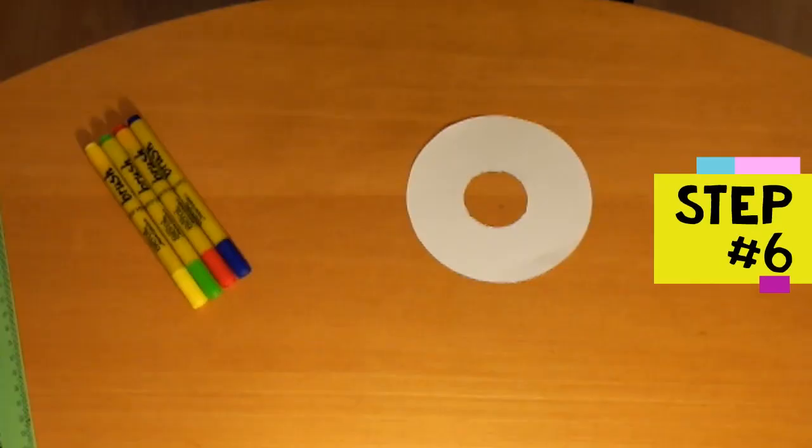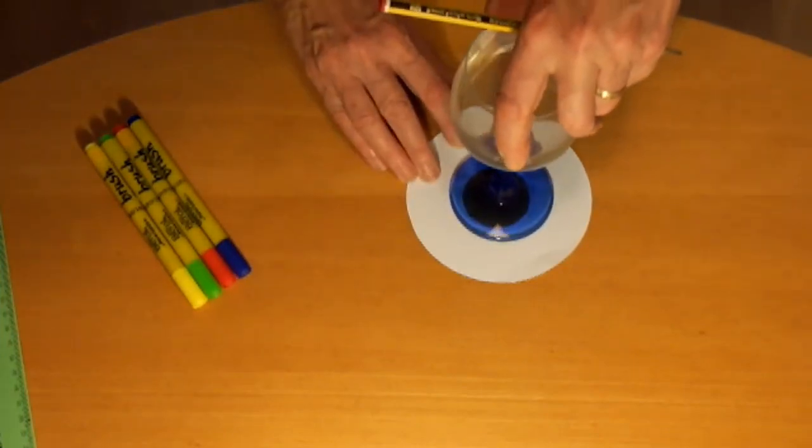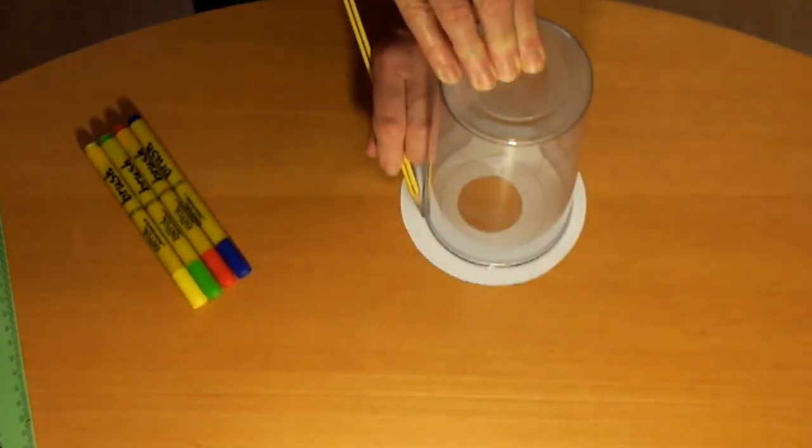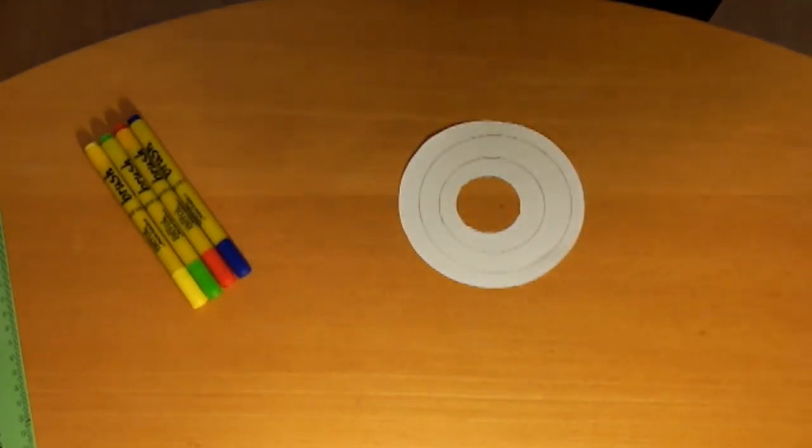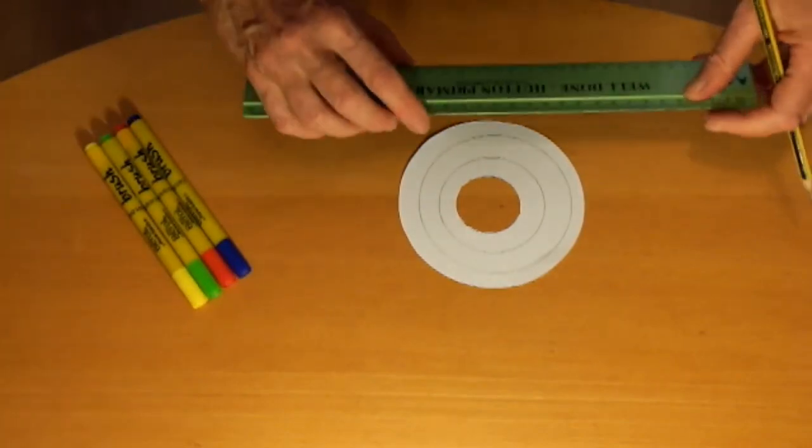Step six is to try mixing colors. You can make concentric circles on the discs by drawing around glasses of different sizes. This lets you try different color mixing effects on one disc. Now I'm dividing each circle up into eight.